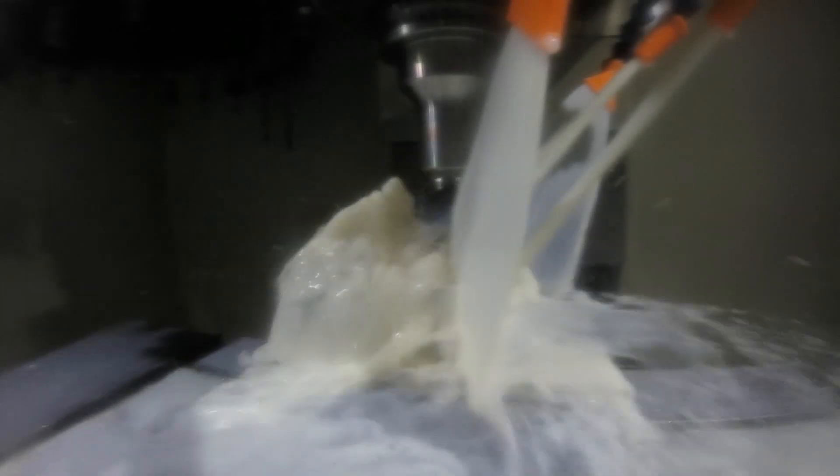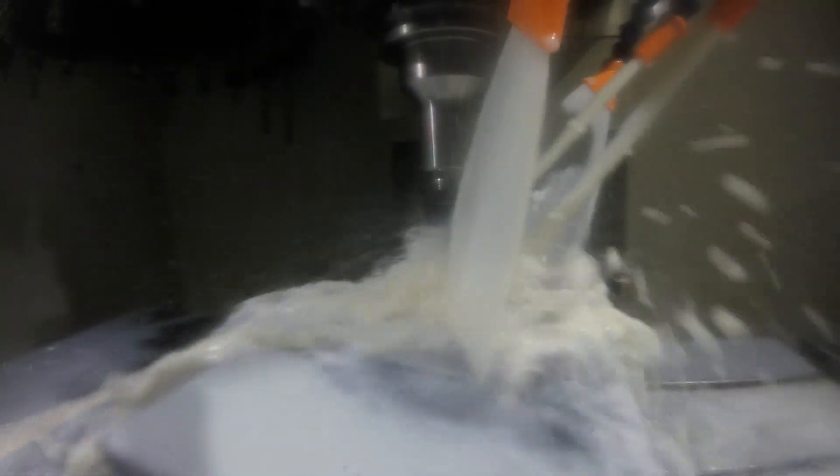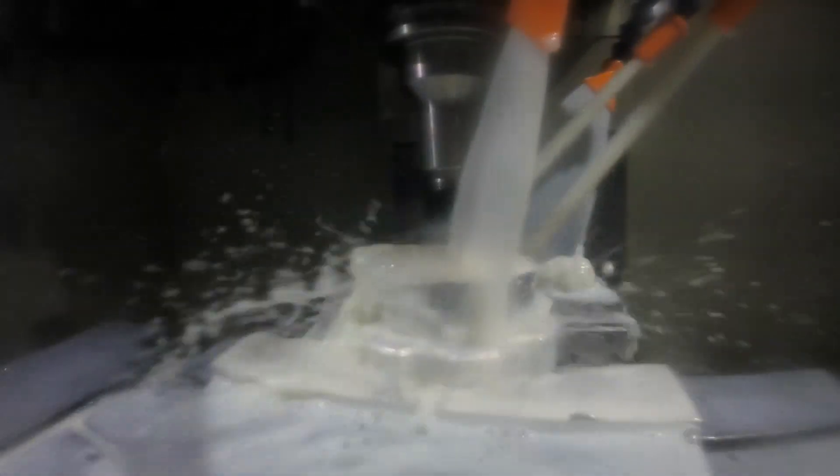Now to finish the part up, we just grab our chamfer mill again. We're just going to do some edge breaks around the ID of that pocket, around the ID of our big pocket, around the OD of the back, and then we're going to do that nice deep 50 thou chamfer on the back side of the knob where your finger pockets are. And that will pretty much wrap it up.